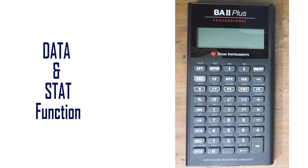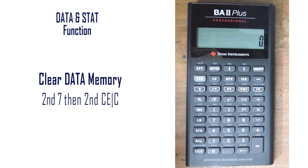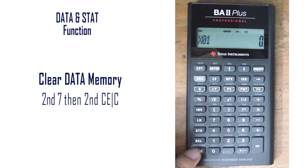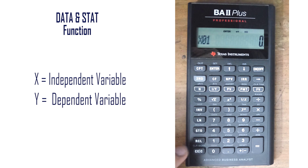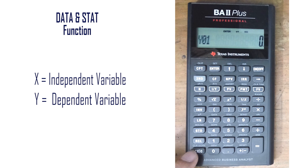Here we are going to learn the data and stat functions on the BA2Plus Professional Calculator. First we need to go to the data function and clear the memory by pressing Second 7 and Second Clear Entry. In this function, the calculator can enter x values as the independent variable and y values as the dependent variable.